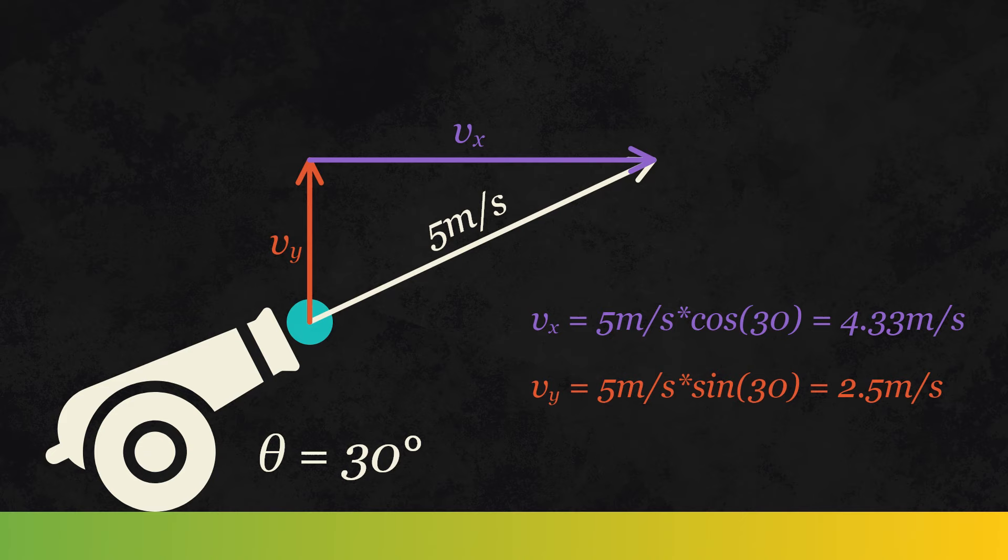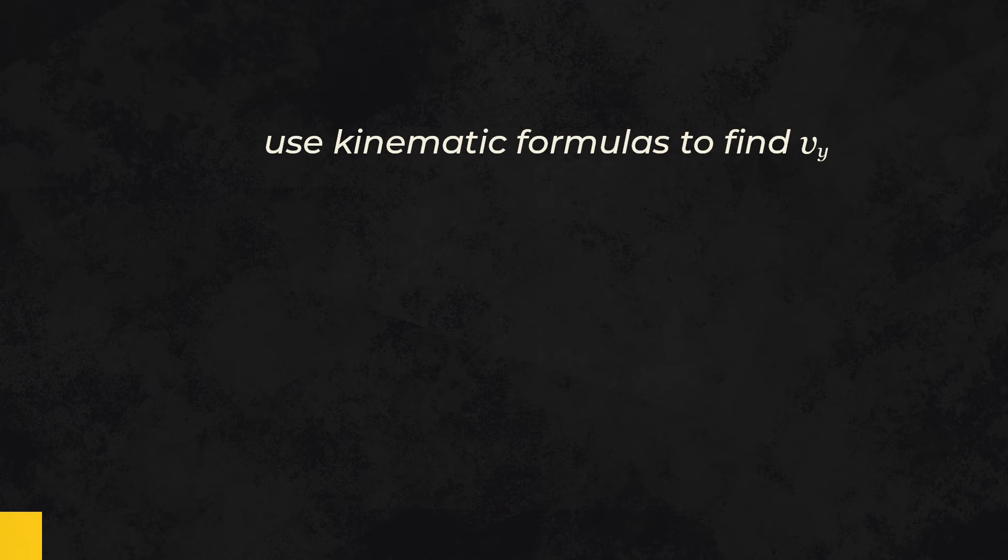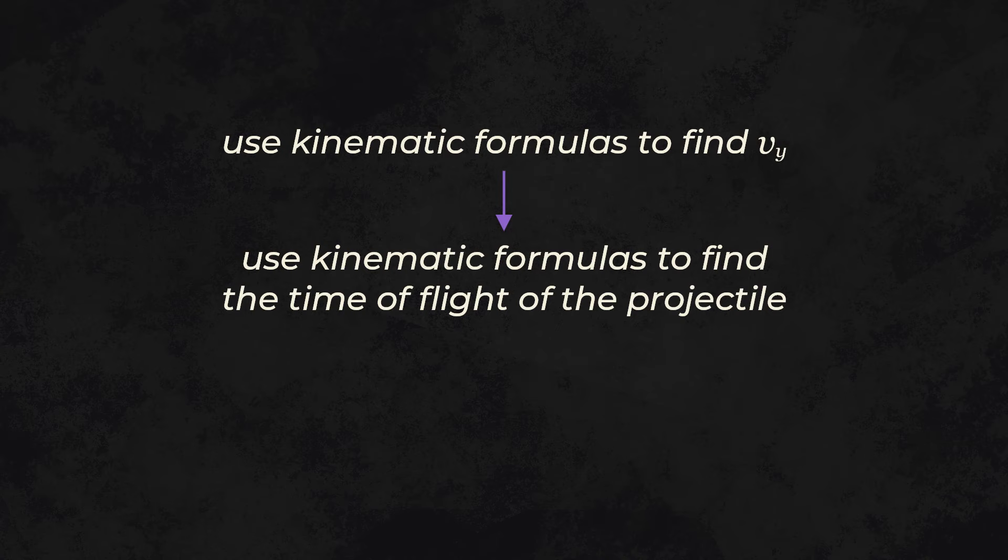Determining the distance of a projectile launched at an angle is a popular problem, because it requires a complete knowledge of kinematics. To solve this problem, first find the speed in the y direction of the projectile. You can use this information to find how long the projectile stays in the air. Then, using the simple v equals d over t formula, you can determine how far it has traveled in the x direction.